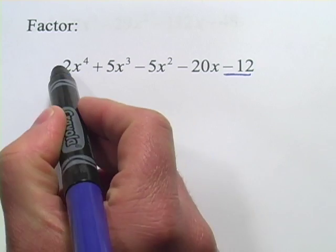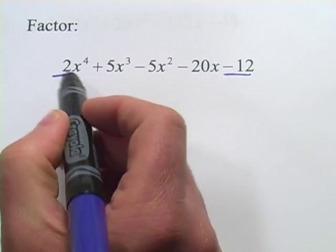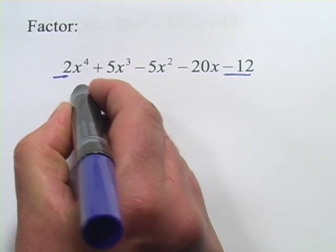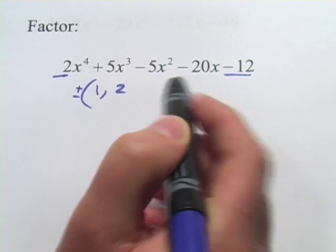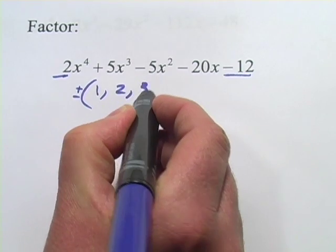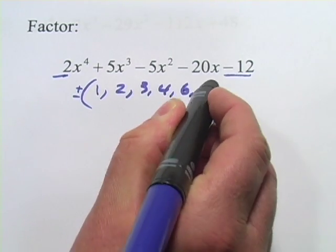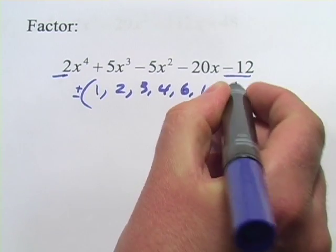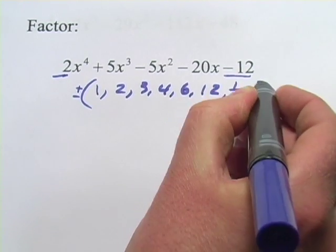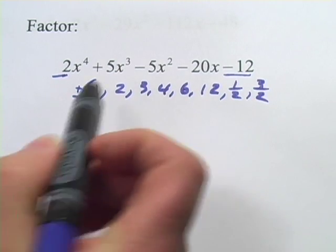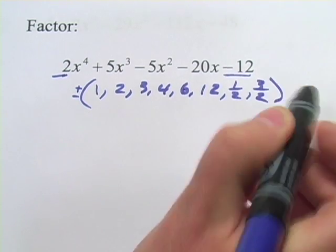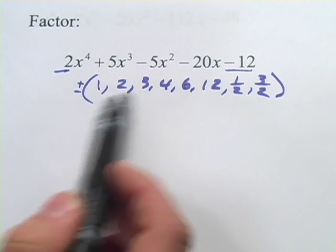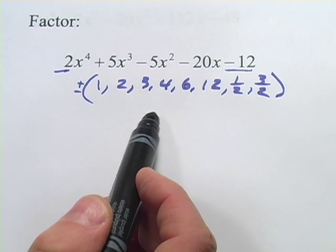So the factors of 12 would be 1, 2, and actually we need to do plus and minus for this whole thing: 1, 2, 3, 4, 6, and 12. And then if I'm also putting these numbers over 2, that would add 1/2 and 3/2. And I think that's it, because 4/2 is 2, 6/2 is 3. So those are the list of possible factors, and that's how we use the rational roots test there.